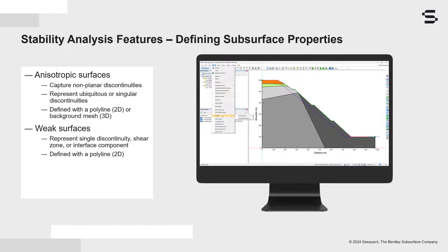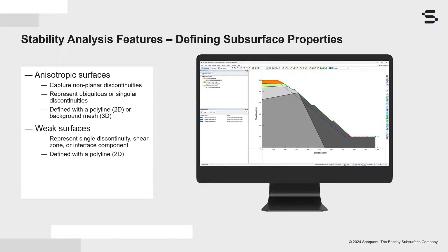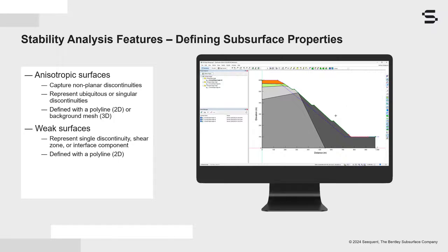Weak surfaces were previously only available in Slope3D. Now a weak surface may be defined in SlopeW to represent a single discontinuity, a shear zone at residual strength, or an interface along a geomembrane. This functionality removes the need to use the impenetrable material model for translational modes of failure along a discontinuity. Any material model can be associated with the weak surface, providing maximum flexibility for defining its strength properties. Like anisotropic surfaces in 2D, weak surfaces are defined using a polyline.